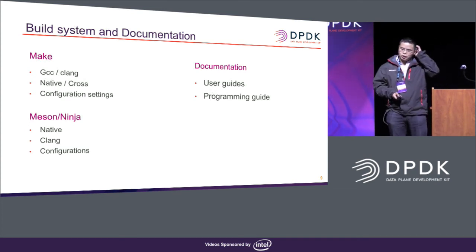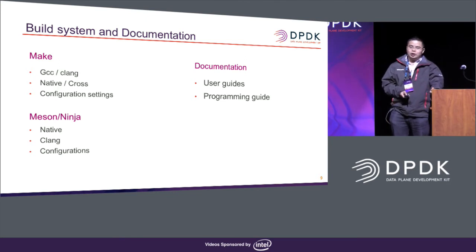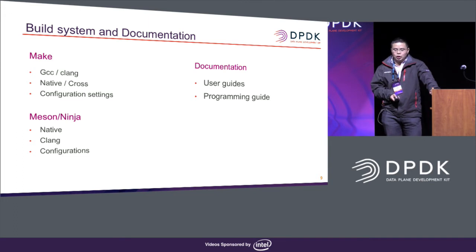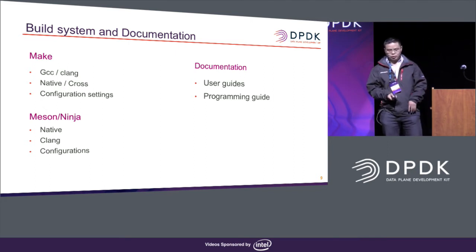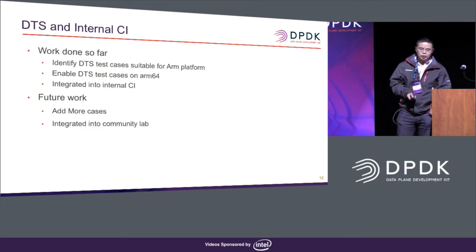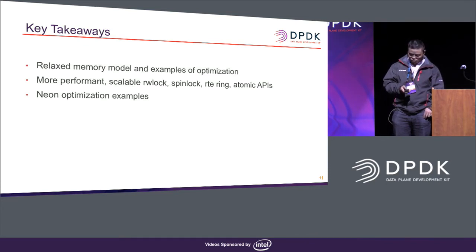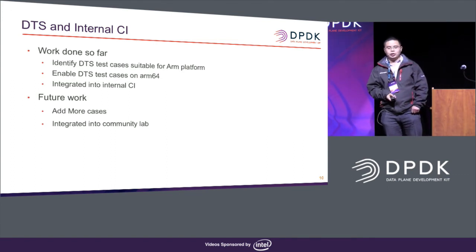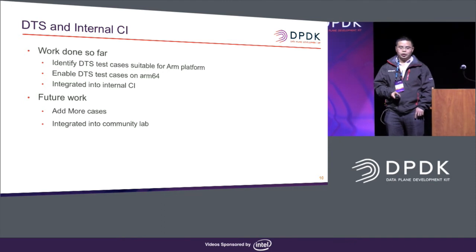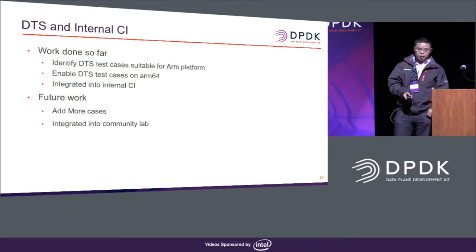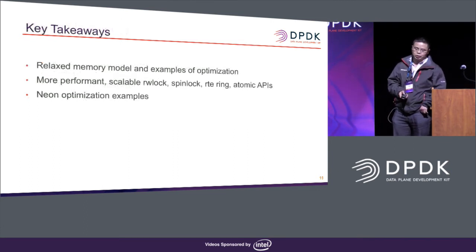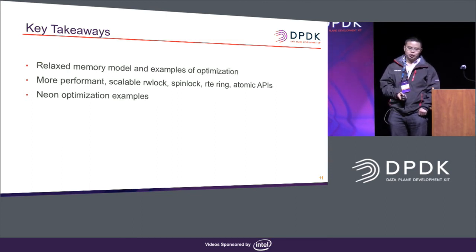The sixth topic covers build system and documentation. We will cover Makefile, GCC, Clang, build tools, toolchains, Meson, and Ninja. We will also submit patches for the ARM64 user guide and API reference guide. We have identified some DTS test cases suitable for ARM64 platforms, enabled these test cases running on ARM64 platforms, and integrated them into ARM's internal CI. In the near future, we want to add more test cases to increase test coverage, and eventually integrate into the public CI.